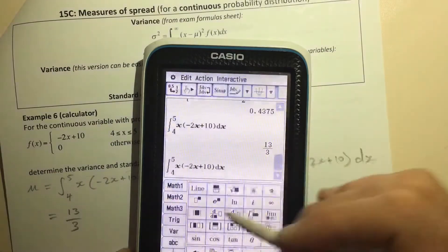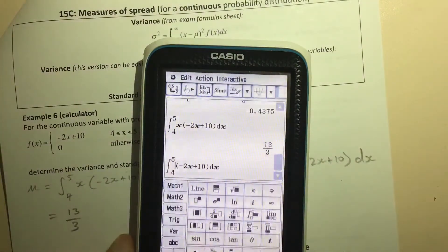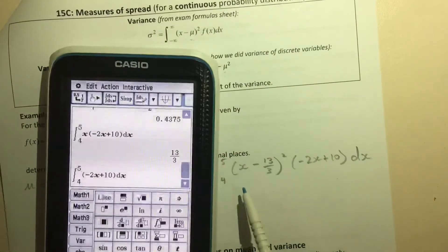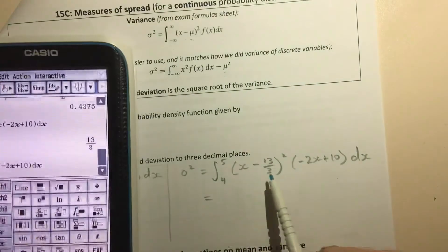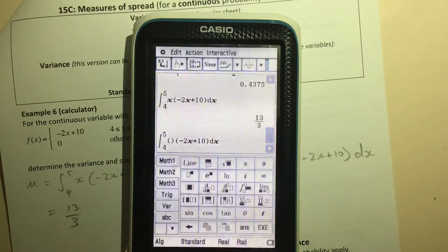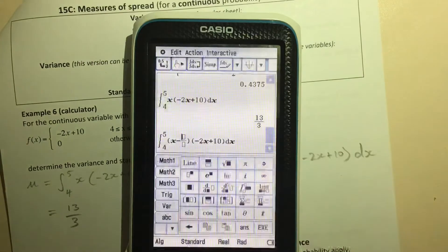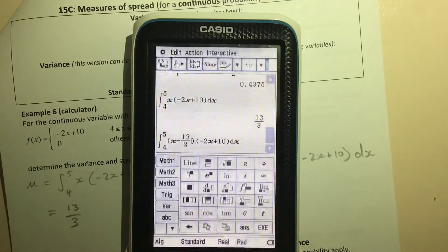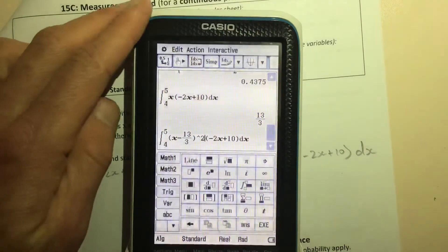So let me be lazy here again. Instead of just having x in front of the function like we did before, we're going to have (x - 13/3)².